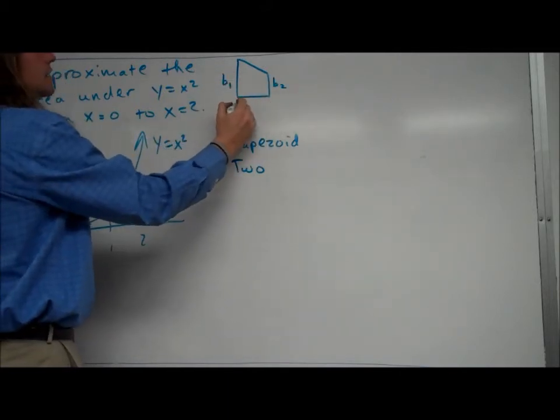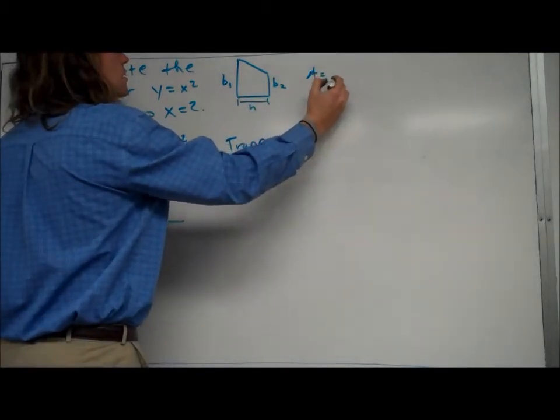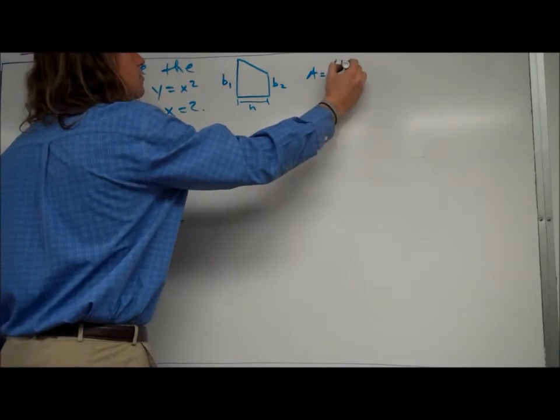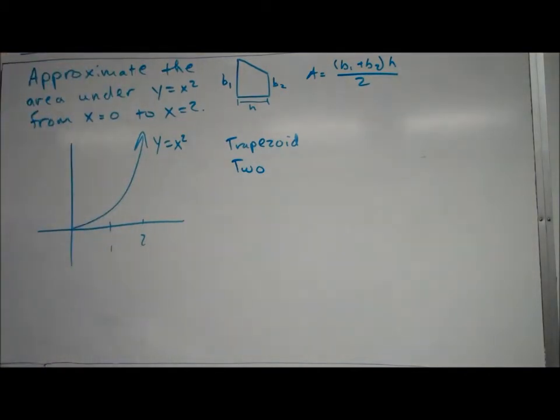The height is the distance in between the two bases, and the area for a trapezoid is base one plus base two times height divided by two.